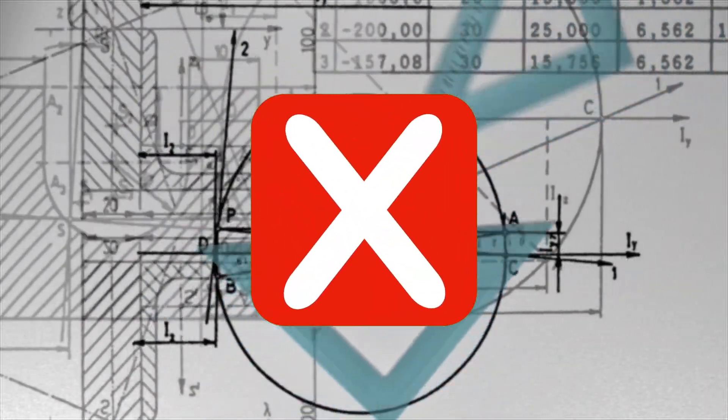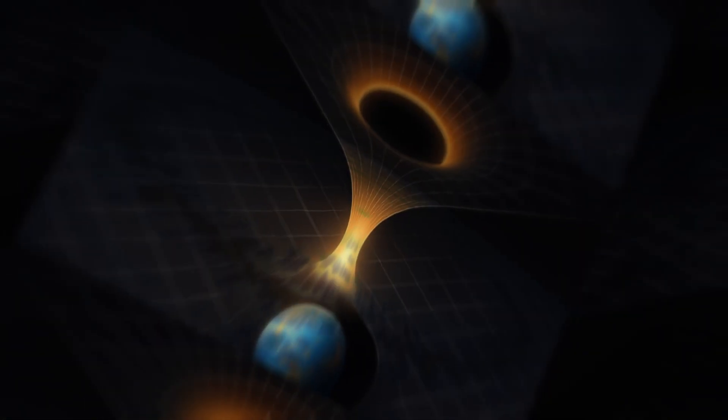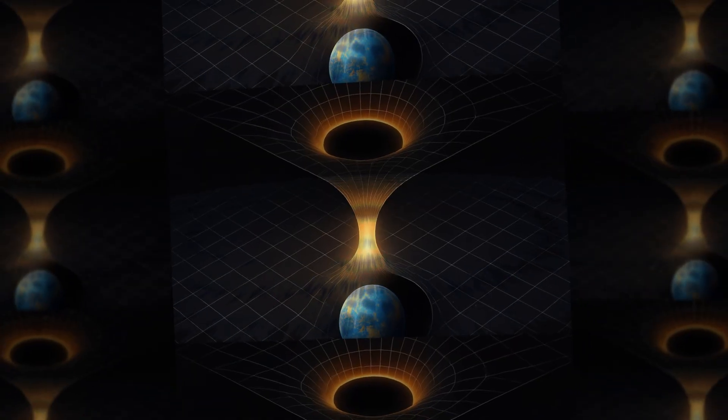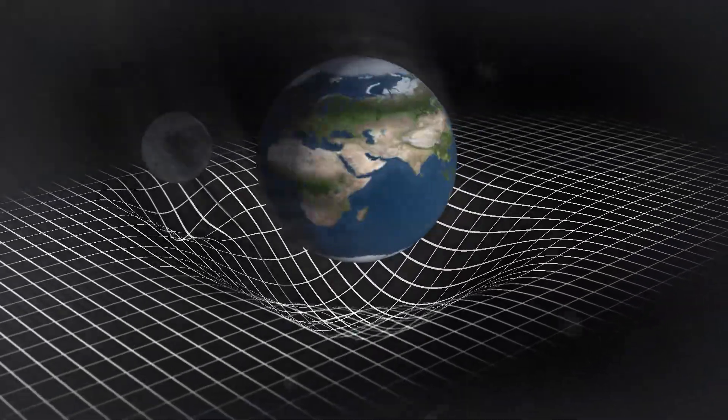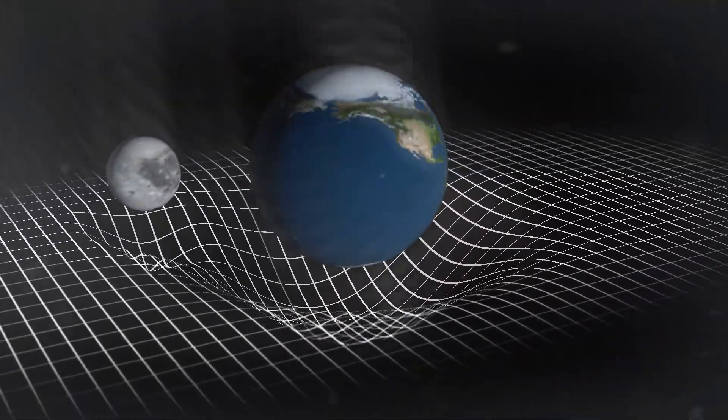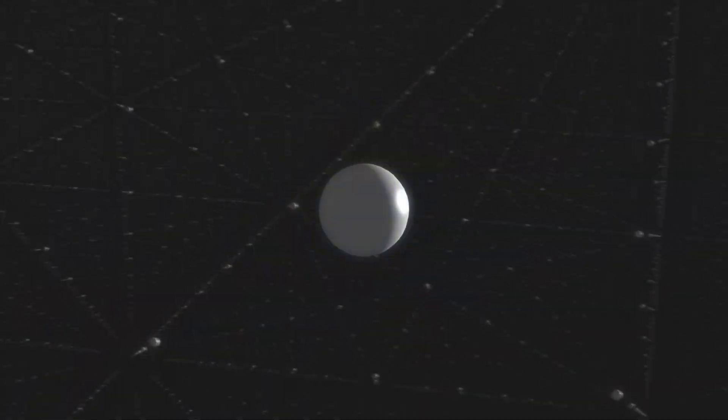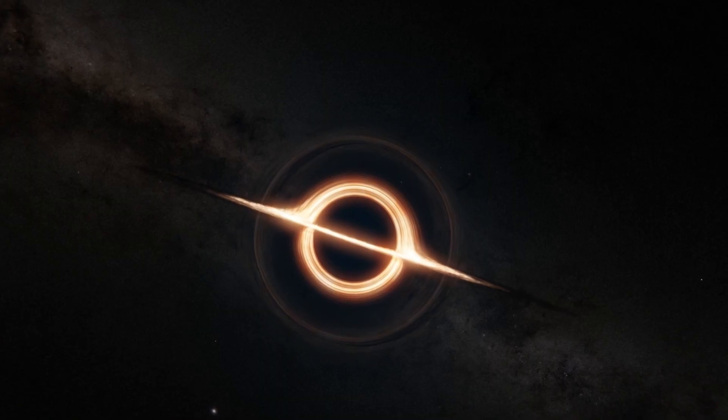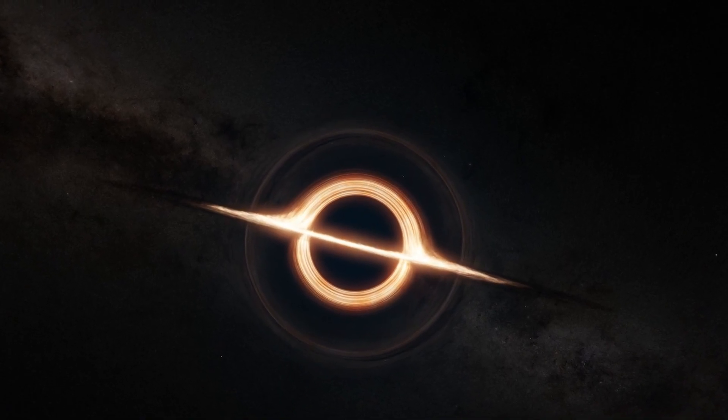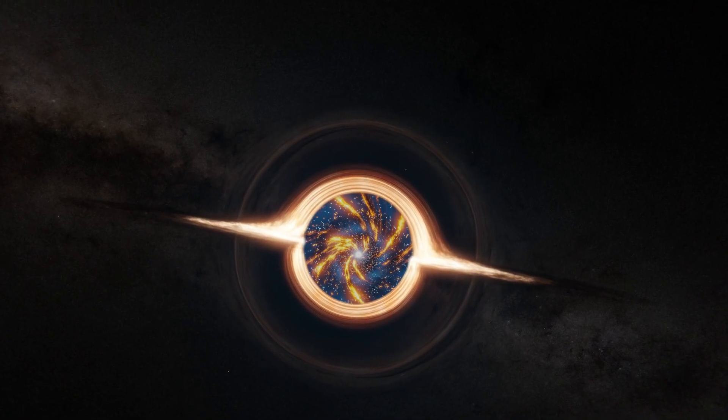The idea that a black hole could lead to another universe is one of the most speculative theories in theoretical physics. But it's grounded in serious attempts to understand spacetime under extreme conditions. This concept suggests that the core of a black hole, instead of being a dead end, could act as a bridge or wormhole hub to a different region of spacetime.